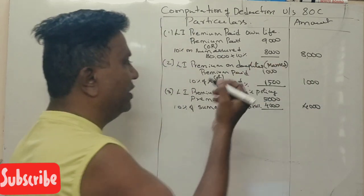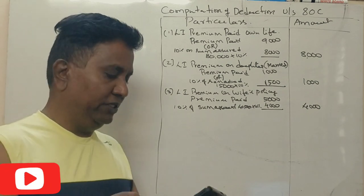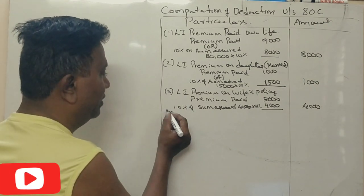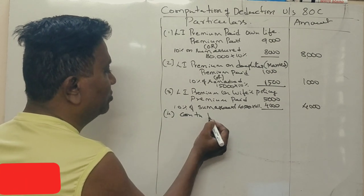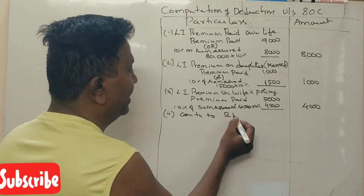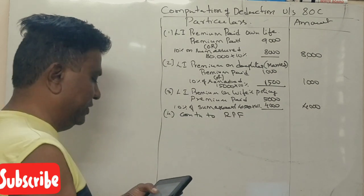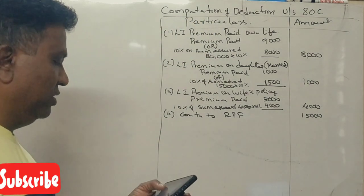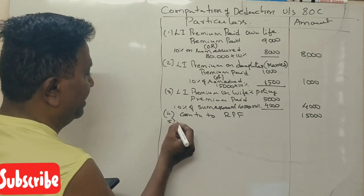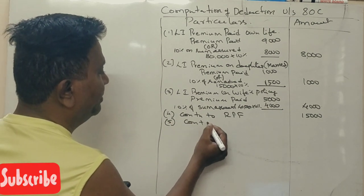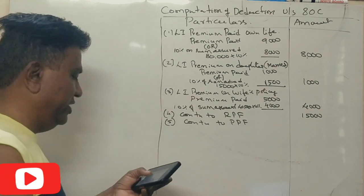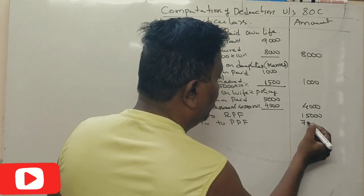Next, contribution to RPF. Full amount eligible, 15,000 rupees. Contribution to Public Provident Fund, full amount eligible.